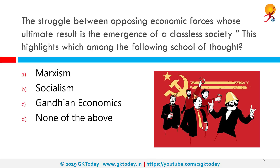The struggle between opposing economic forces whose ultimate result is the emergence of a classless society highlights which among the following schools of thought? The correct answer is Marxism. Marxism is a theory and method of working class self-emancipation. As a theory, it relies on a method of socio-economic analysis that views class relations and social conflict using a materialist interpretation of historical development and takes a dialectical view of social transformation.